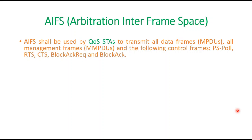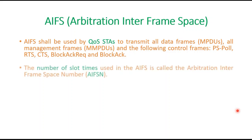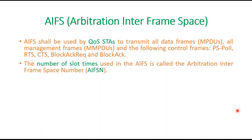AIFS is used to transmit all data frames (MPDUs), all management frames (MMPDUs), and the following control frames: PS-Poll, RTS, CTS, BlockAck Request, and BlockAck. In AIFS, the number of slot times used is called the Arbitration Interframe Space Number, or AIFSN.